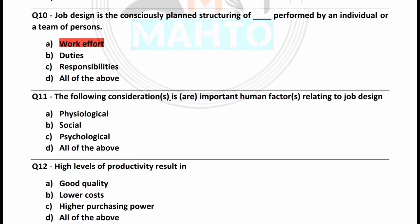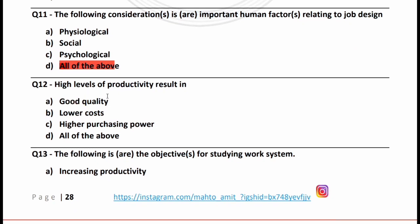The following considerations are important human factors relating to job design: physiological, social, psychological, or all of the above. The right answer is option D, all of the above. A high level of productivity results in: good quality, lower cost, higher purchasing power, or all of the above. The right answer is option D, all of the above.